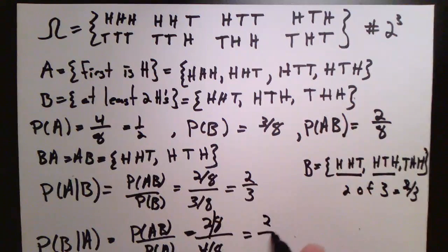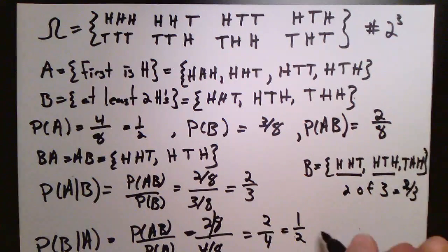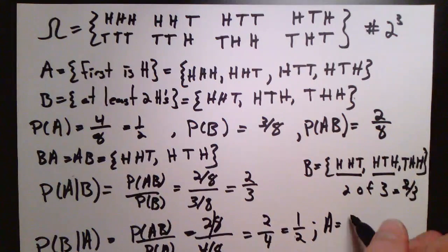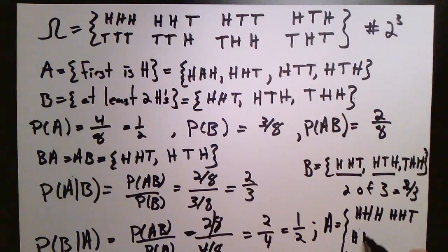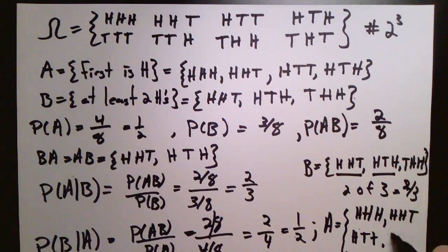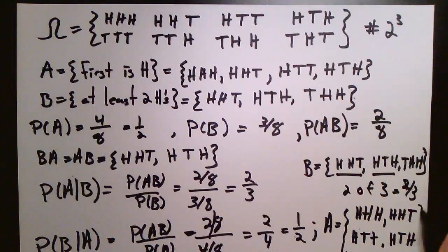Similarly, if we know that A has already happened, the probability of B given A would be just one half. That's two eighths over four eighths. Or if we look in the set B—A, we already know we're in the set A. That's these four possibilities. And then which of them also satisfy B?